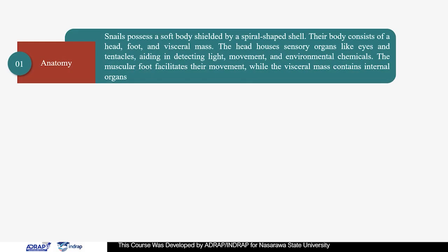Anatomy: Snails possess a soft body shielded by a spiral-shaped shell. The body consists of a head, foot, and visceral mass. The head houses sensory organs like the eyes and tentacles, aiding in detecting light, movement, and environmental chemicals. The muscular foot facilitates their movement, while the visceral mass contains internal organs.